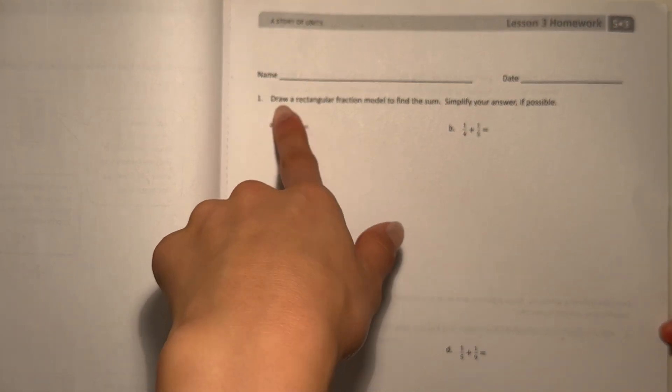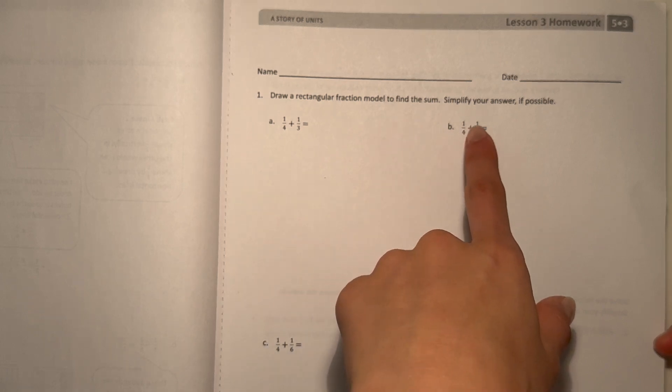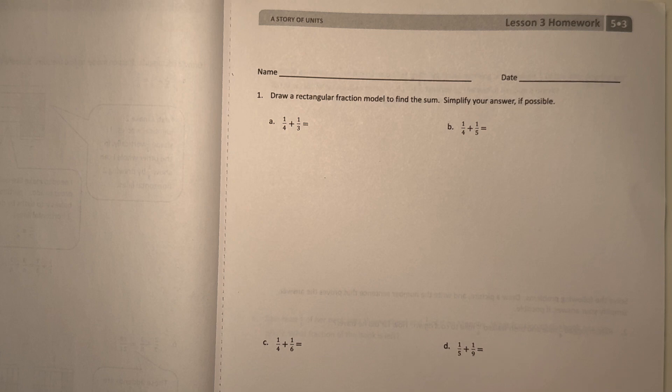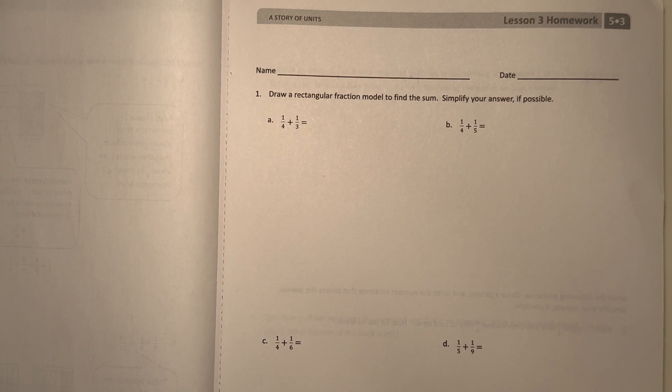Number one, draw a rectangular fraction model to find the sum. Simplify your answer if possible. Alright, A, we have one-fourth plus one-third. So first we're going to draw that out.